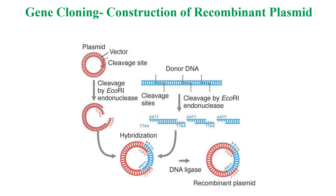Now let us see what are the steps involved in the construction of a recombinant plasmid by gene cloning. We have a plasmid, we are using ECO-R1 as the restriction enzyme, and we are also using a DNA ligase. Hence we have all the basic requirements for genetic engineering — a plasmid, a restriction enzyme, and a DNA ligase.